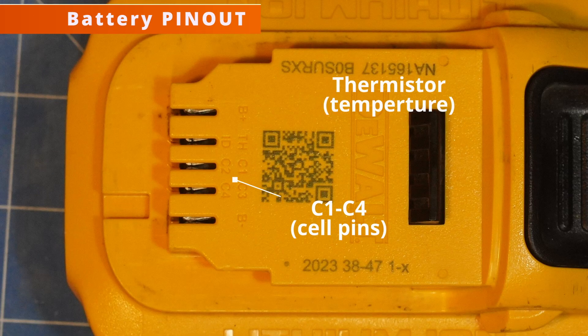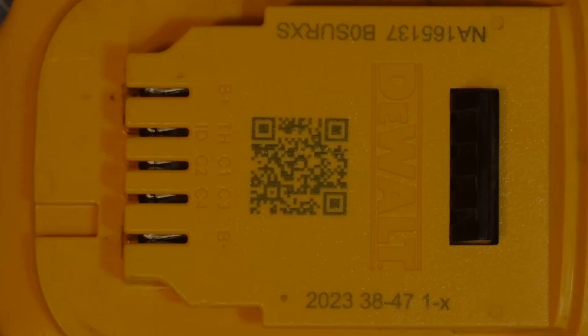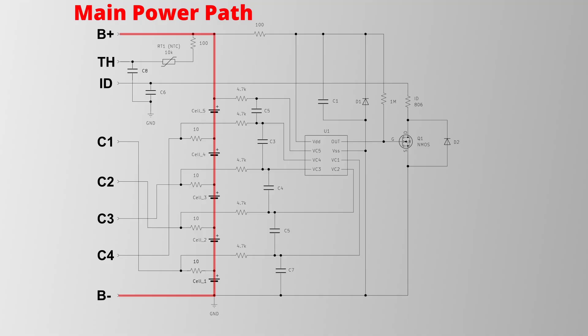DeWalt batteries have pins for all five cells, a thermistor and an ID resistor. The circuit board is pretty simple and has been sketched by a few people. The important parts are a 10kohm thermistor for temperature measurement and an ID resistor to tell the charger what's the maximum charging current.